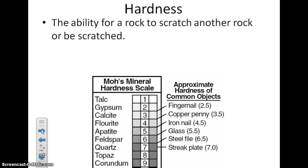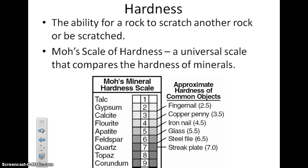Hardness is the ability for a rock to scratch another rock or to be scratched. If it has a high hardness, it's difficult to scratch and it'll scratch a lot of other stuff. We use the Mohs mineral hardness scale to determine the hardness of a mineral. Talc is going to be an example of a very weak, very soft mineral — we actually make talcum powder from talc. And then down here you have things like topaz, corundum, and even quartz, which has a very high hardness, meaning it can scratch a lot of other stuff.